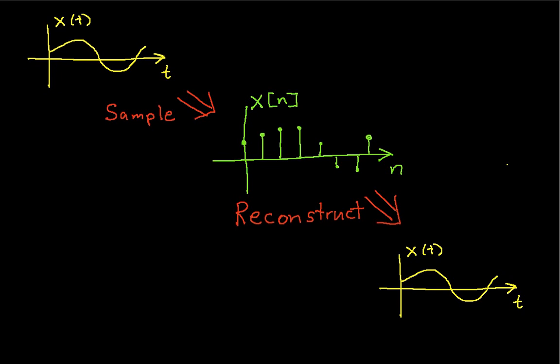So again, the question that we're asking in deriving the sampling theorem is how many samples per second do we need? So how many of these guys over here per second do we need in order to be able to accurately reconstruct the sampled waveform?